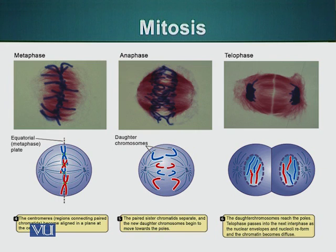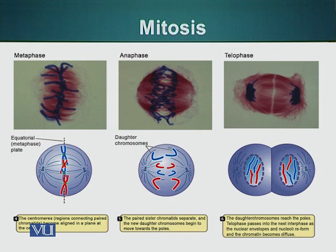During metaphase, chromosomes line up at a specific axis called the equatorial plate. Chromosomes which were moving back and forth have now lined up in the center. At this stage there is a checkpoint: the cell tries to see whether all the kinetochores are attached to the spindle fibers. For each chromosome, one kinetochore is attached to a spindle on one side and the other kinetochore on the same chromosome is attached to the spindle on the other side.